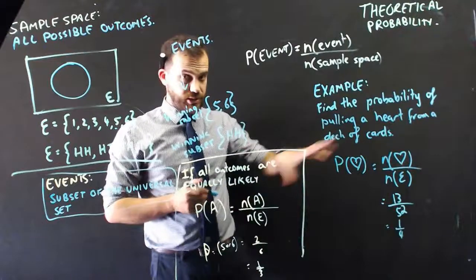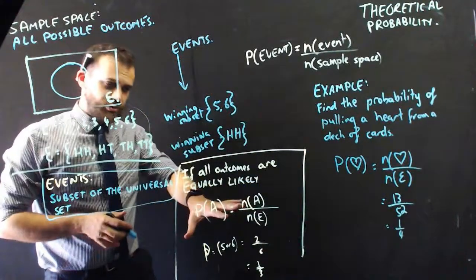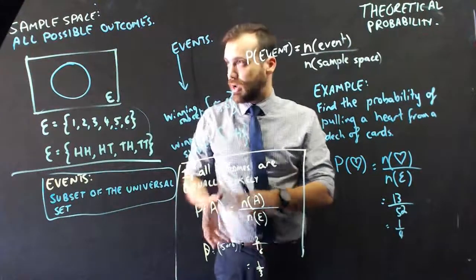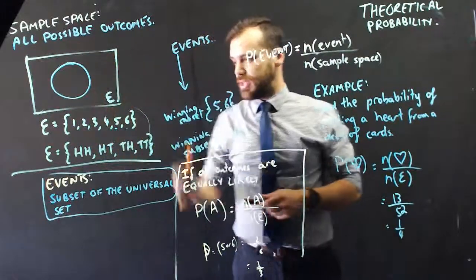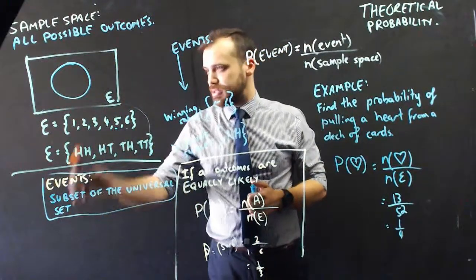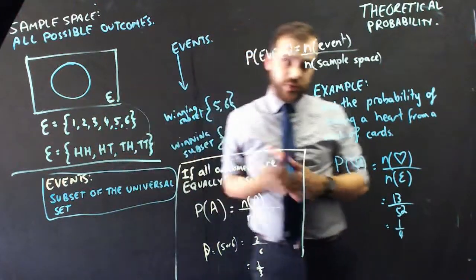Alright, you've definitely done this stuff before. We're just using some new terminology here. The sample space is going to be our universal set, and the events are going to be a subset of that universal set.